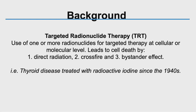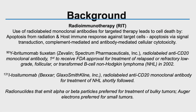TRT typically leads to cell death by: one, direct radiation; two, crossfire; and three, the bystander effect. One of the earliest examples of this is thyroid disease or thyroid cancer, which can be treated with radioactive iodine and has been since the 1940s. In terms of radioimmunotherapy, often referred to as RIT, this is the use of radio-labeled monoclonal antibodies for targeted therapy that leads to cell death by apoptosis from radiation and host immune response against target cells.